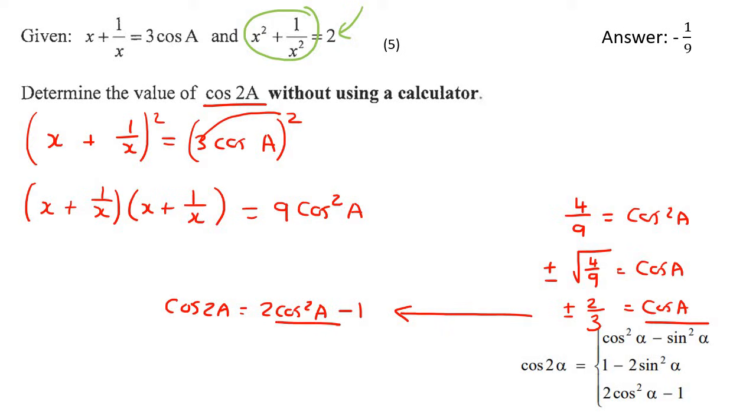So, what we could then do is we could say that cos 2a is the same as 2 cos squared of a minus 1. Now, we know what cos a is. Cos a is plus or minus 2 over 3. So, I'm going to actually, you could do this in two individual questions, but I'm going to show you something quite interesting. So, 2. Now, cos a can be plus or minus 2 over 3, right? And then I just put the square on the outside like that. Minus 1.